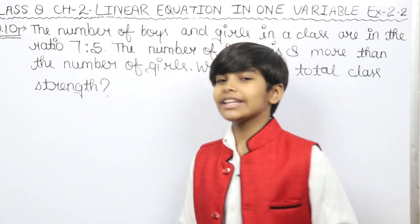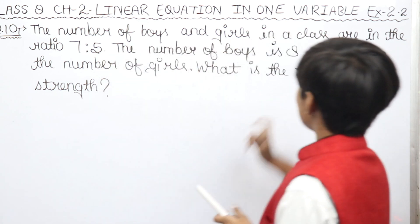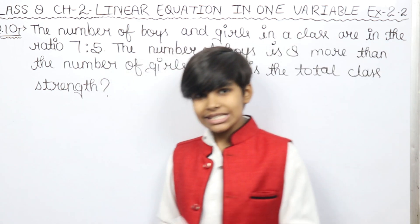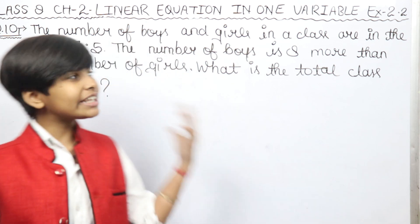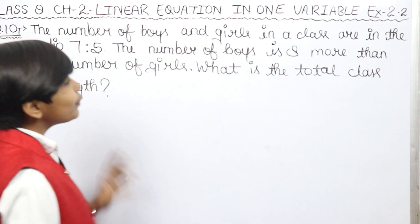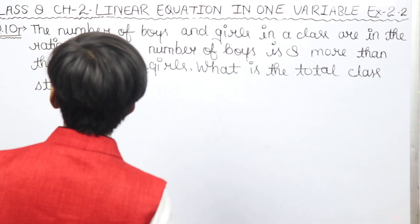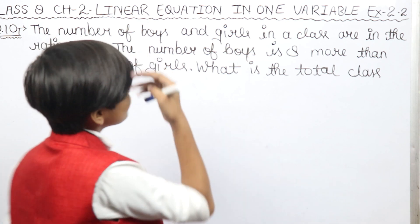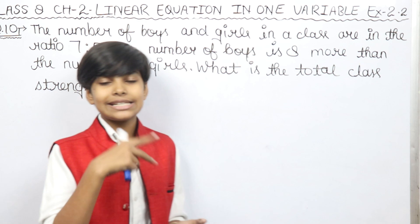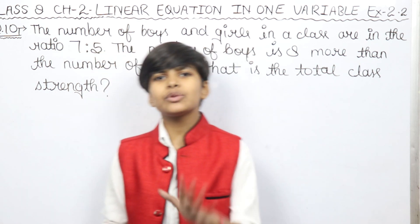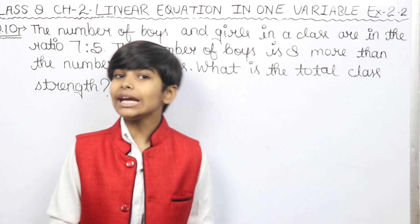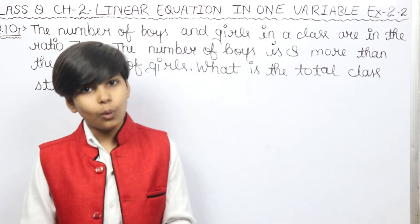So let's look at Question 10. The number of boys and girls in a class are in the ratio 7:5. The number of boys is 8 more than the number of girls. For example, if girls are 20 in class, then boys will be 28 — 8 more than the number of girls.